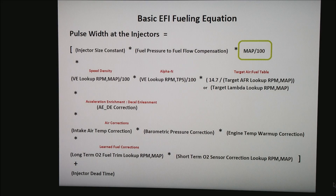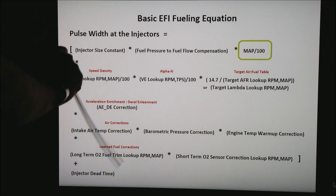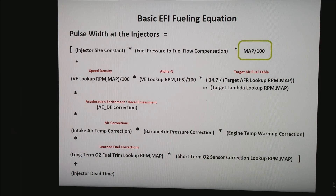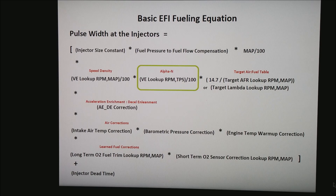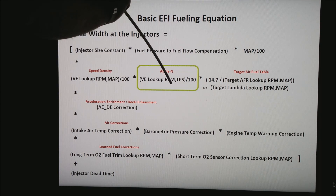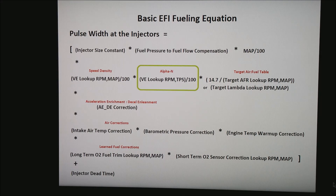The next piece is MAP divided by 100. This is normally an option in the ECU setup that basically balances these two pieces of the equation to a flatter table — most of the time I do end up turning that on. The next piece is our speed density lookup: the volumetric efficiency lookup based on RPM and manifold air pressure divided by 100. The next piece is the alpha-N section, which is a VE lookup based on RPM and throttle position, also divided by 100.